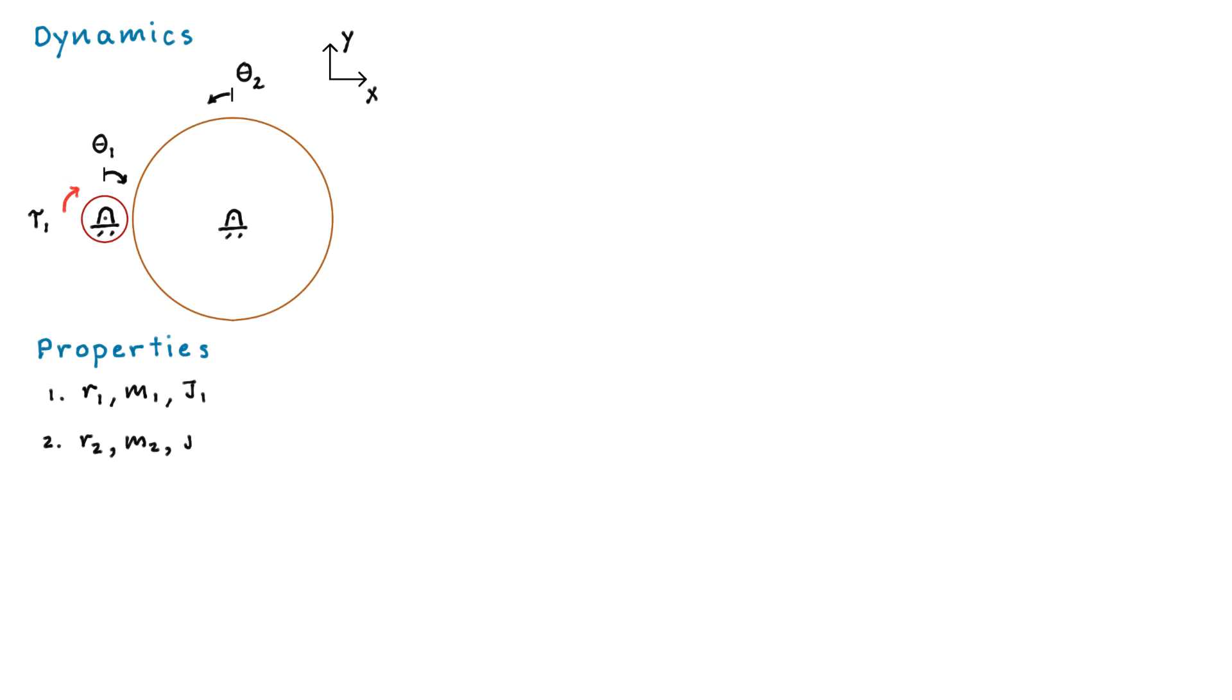Let's get some properties down for this. We have radiuses, masses, and mass moments of inertia about the rotation axis, which is out of the page. So I'm just denoting those things as R, M, and J, respectively.